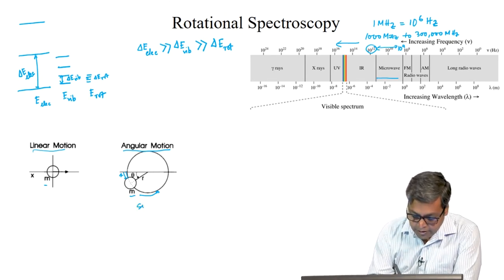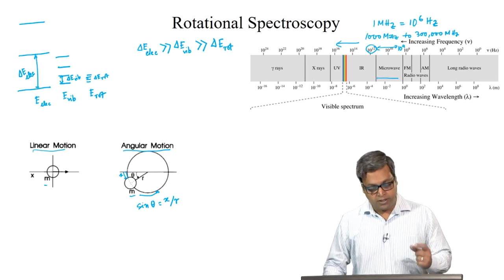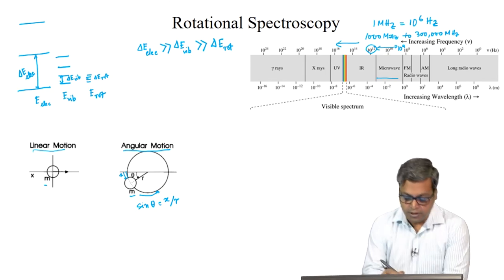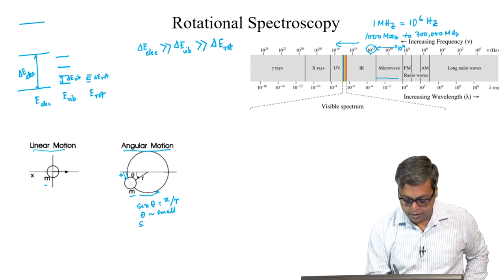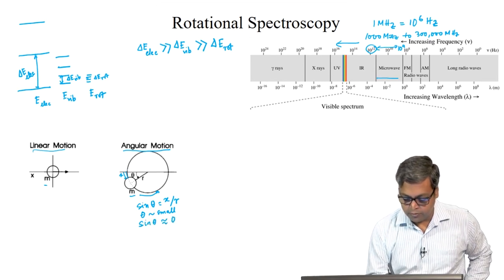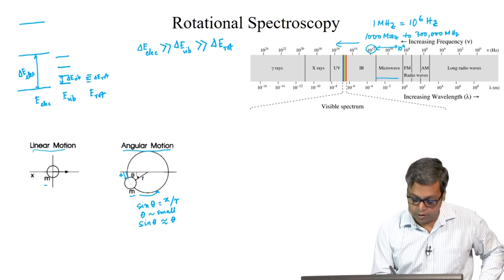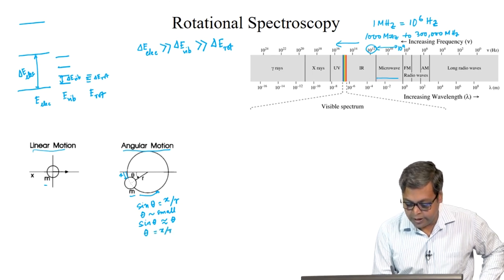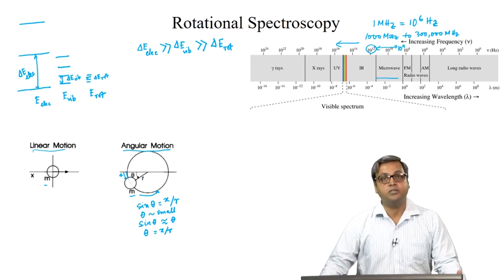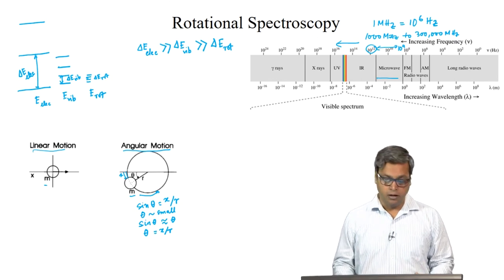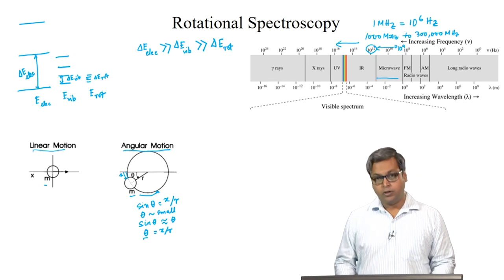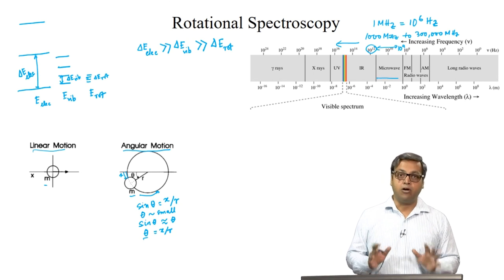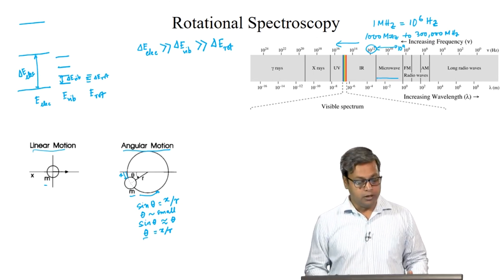We can write sin theta equals x by r. Because we have considered this displacement to be very small, theta is also very small. And because theta is small, we can write sin theta is approximately equal to theta. Because r is a constant as the particle is rotating in a circle of constant radius, x is a variable and so is theta. Thus, we can think the distance in linear motion is analogous to the angle swept out by the particle in angular or rotational motion.